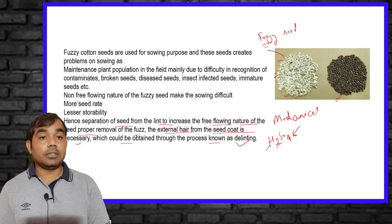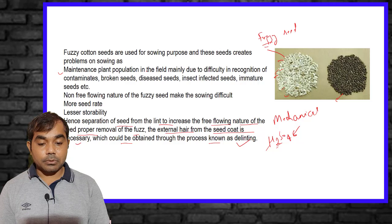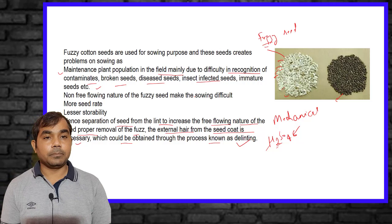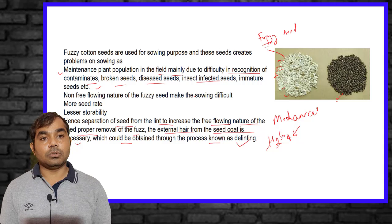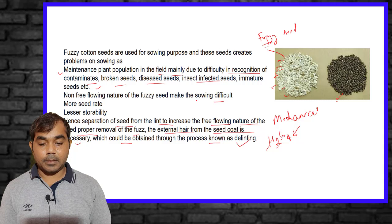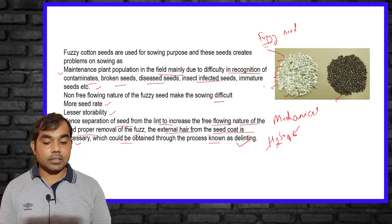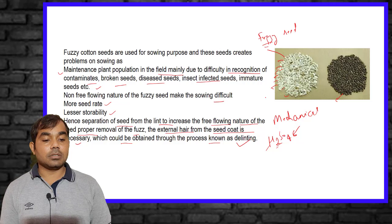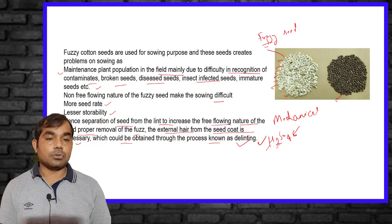Advantages of delinting: it helps maintain plant population by allowing proper recognition of contaminated, broken, diseased, insect-infected, or immature seeds. Fuzzy seeds are difficult to identify for quality, have poor free-flowing nature causing sowing difficulties, require higher seed rates, and have lesser storability. Delinting with H₂SO₄ is therefore very important for maintaining proper plant population and reducing cost.